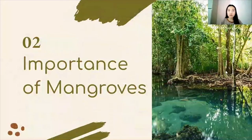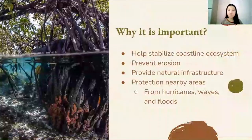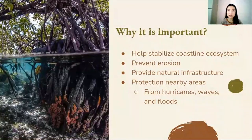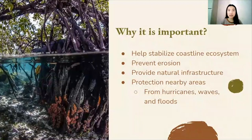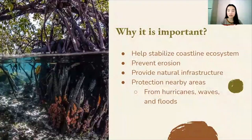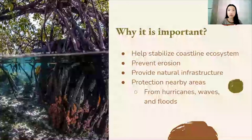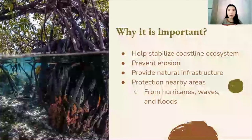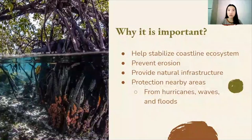Next, I will talk about the importance of mangroves. Mangroves are very important because they help stabilize the coastline ecosystem. The long roots of mangroves hold sediments, slow the water, prevent erosion, and protect the coastlines. Mangroves also provide natural infrastructure and protect nearby areas by absorbing storm surge impacts during extreme weather events, such as hurricanes, waves, and storms.